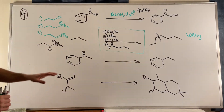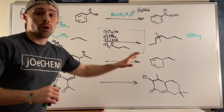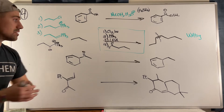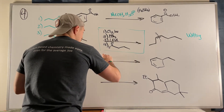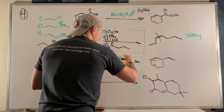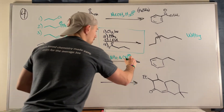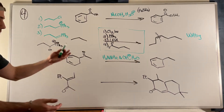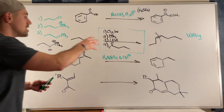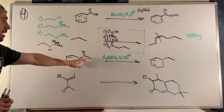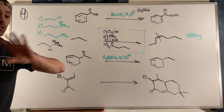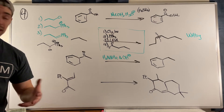For the third reagent question, the carbonyl vanishes while double bonds remain intact — this screams Wolff-Kishner. The conditions are heat, hydroxide, and hydrazine. Wolff-Kishner focuses on ketones and aldehydes, reduces them to methylenes, and is not sensitive to double bonds — it looks past them.